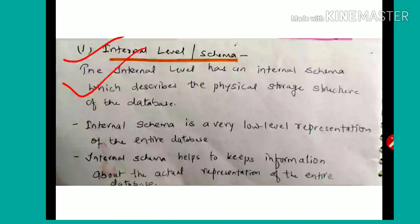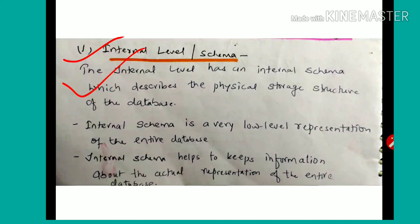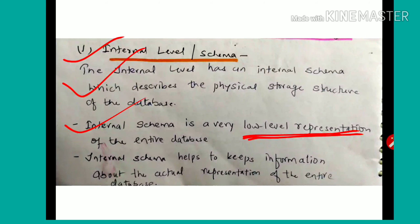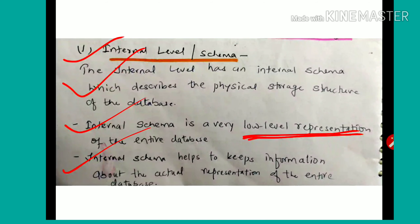The internal level has an internal schema which describes the physical storage structure of the database. Physical storage structure shows the internal schema at this level. Internal schema is a very low-level representation of the entire database, because internally the data is in bytes or gigabytes form — how it is stored in memory. Internal schema helps to keep information about the actual representation of the entire database.